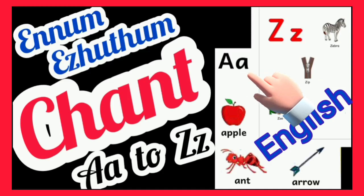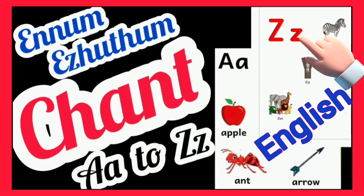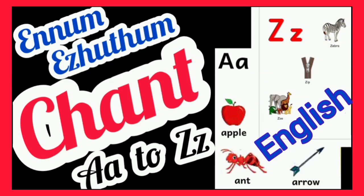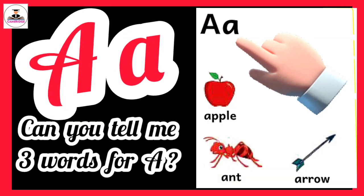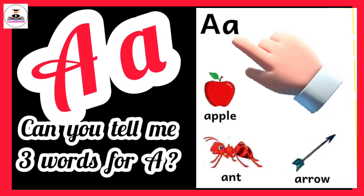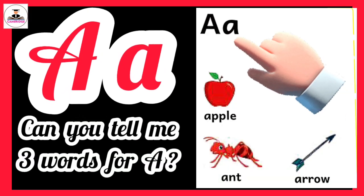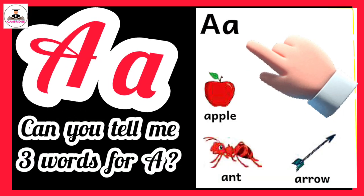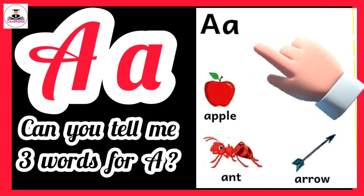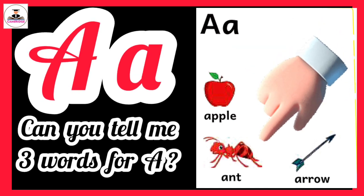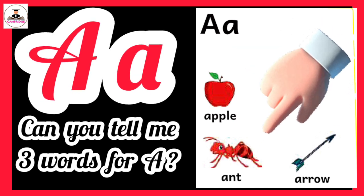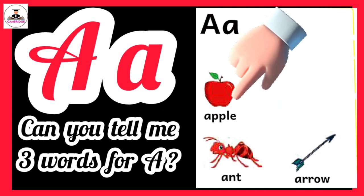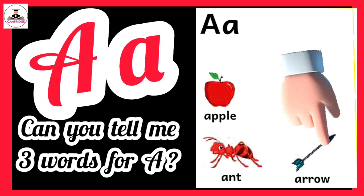A to Z. One, two, three. Can you tell me three words for A? A for ant, apple and arrow.